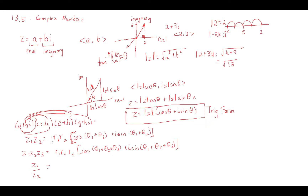For division, it's the opposite of multiplication: you divide the magnitudes and you subtract the angles. You still use cosine and sine with addition on the inside, but the angle gets subtracted instead. So that's multiplication and division.